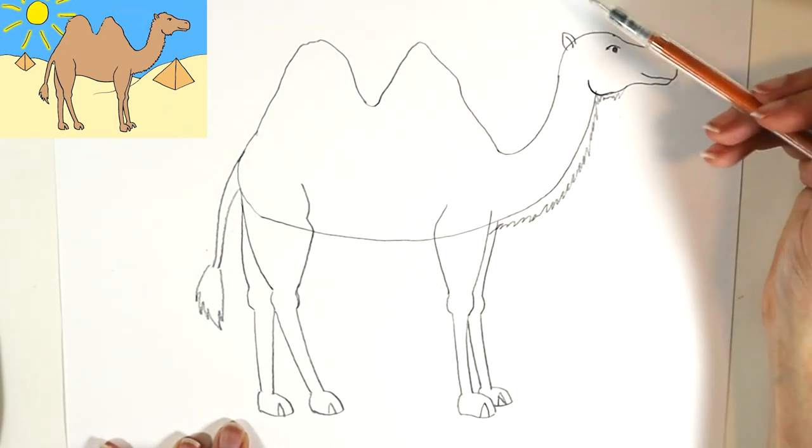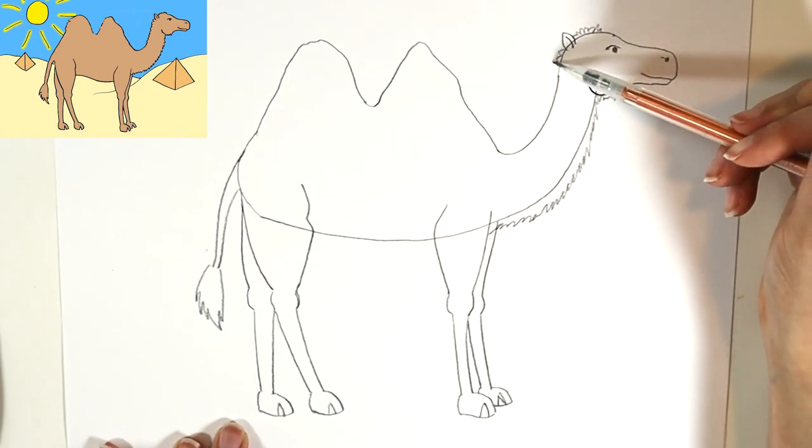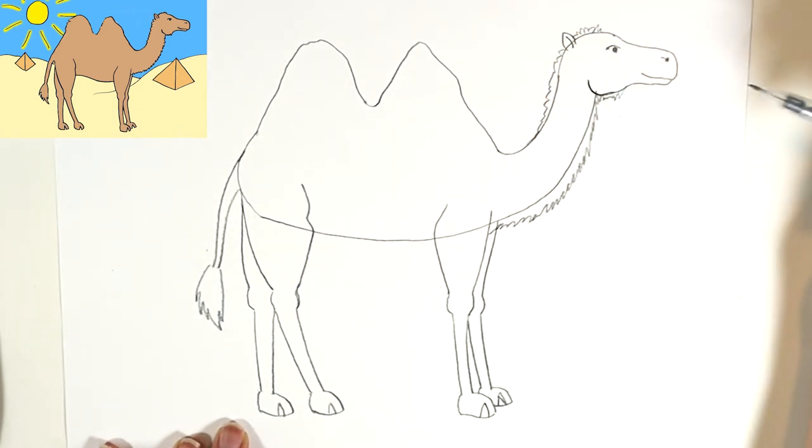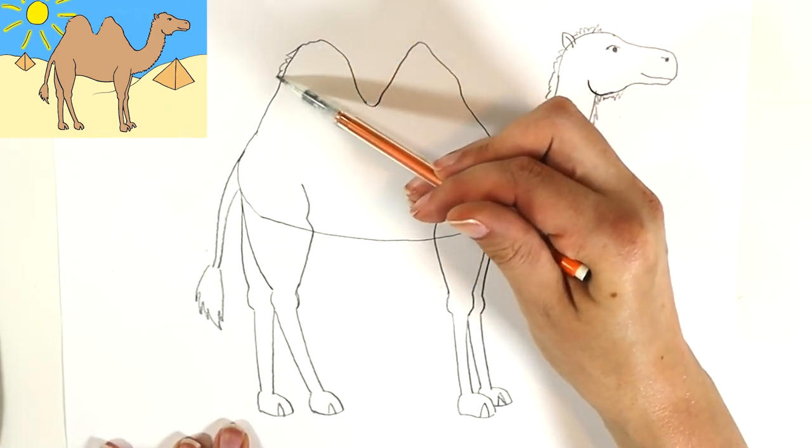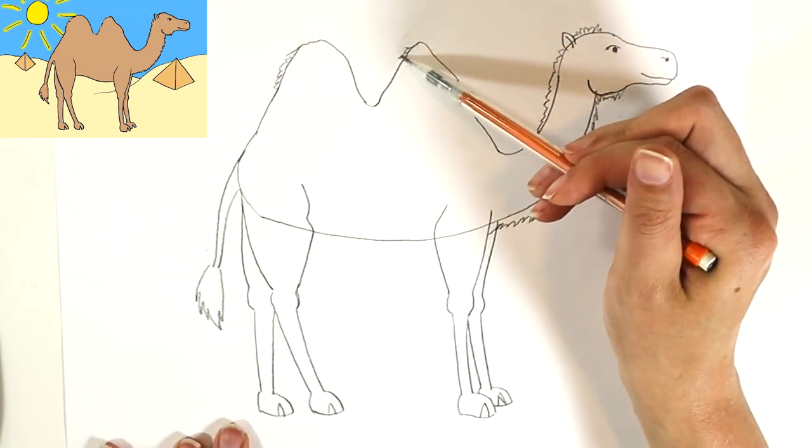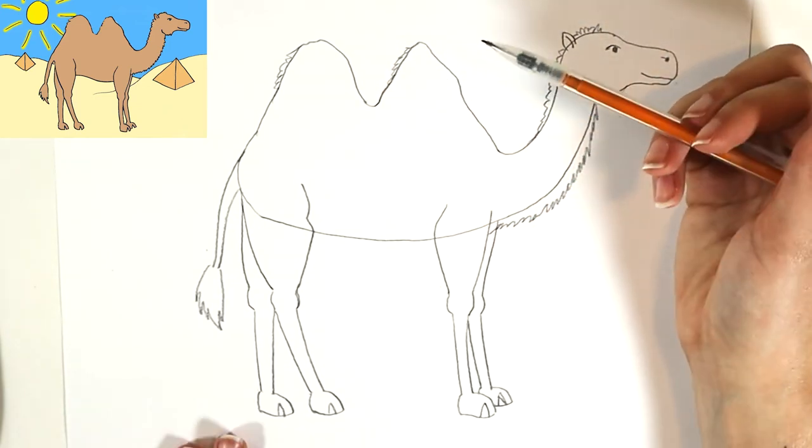There we go. And I'm gonna add a little on the head because I just think it'd be cute on the back of the neck. There we go. You can even add some fluffies to like the humps on the back because they do have like kind of fluffy hair there.